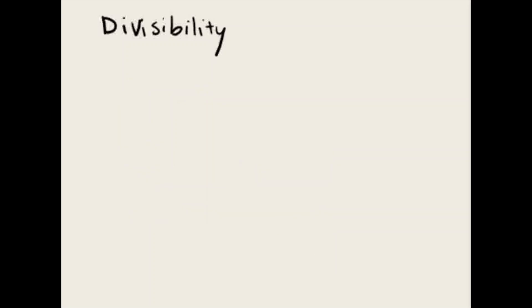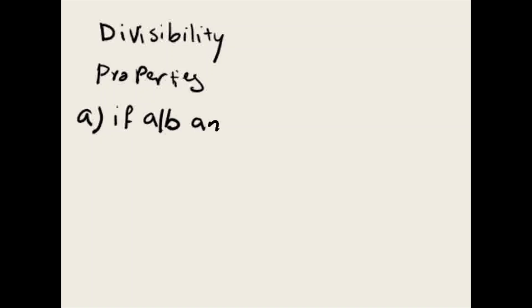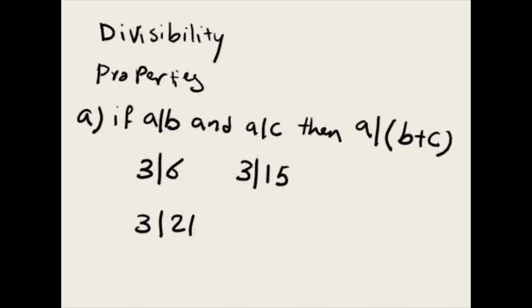There are a few properties that you have to keep in mind for divisibility. If A divides B and A divides C, then A divides B plus C. Now if you want to look at an example for this, if 3 divides 6 and if 3 divides 15, then 3 divides 21 because 15 plus 6 will give us 21. So this one is B plus C and we know that this is divisible.